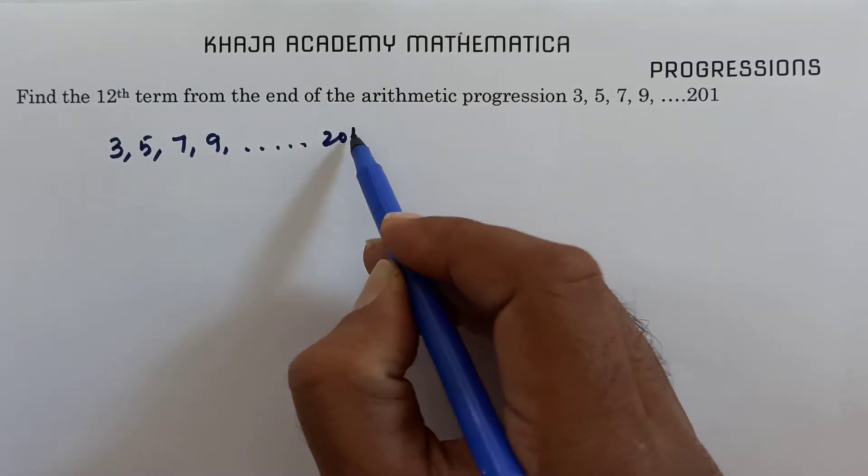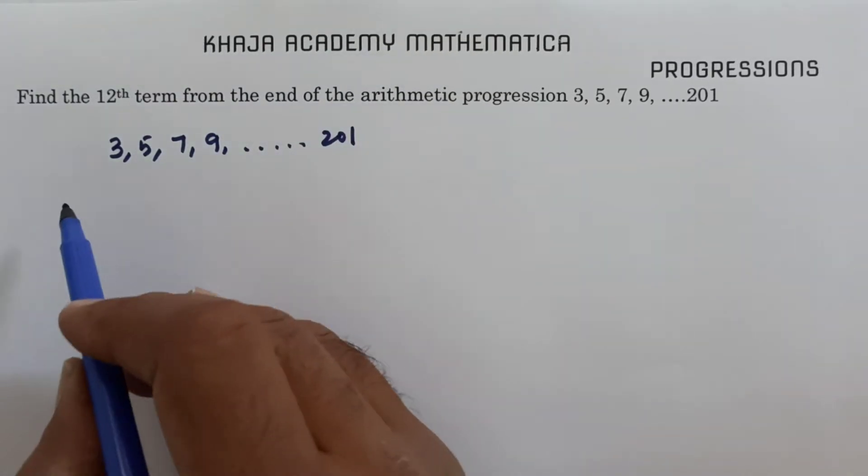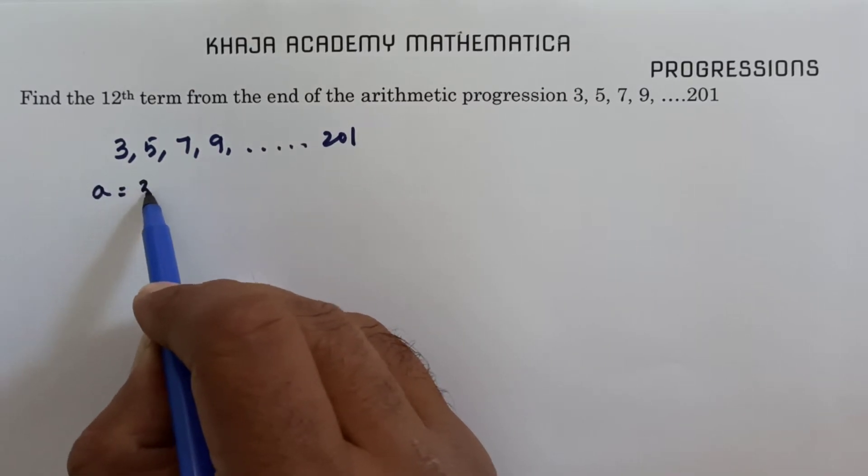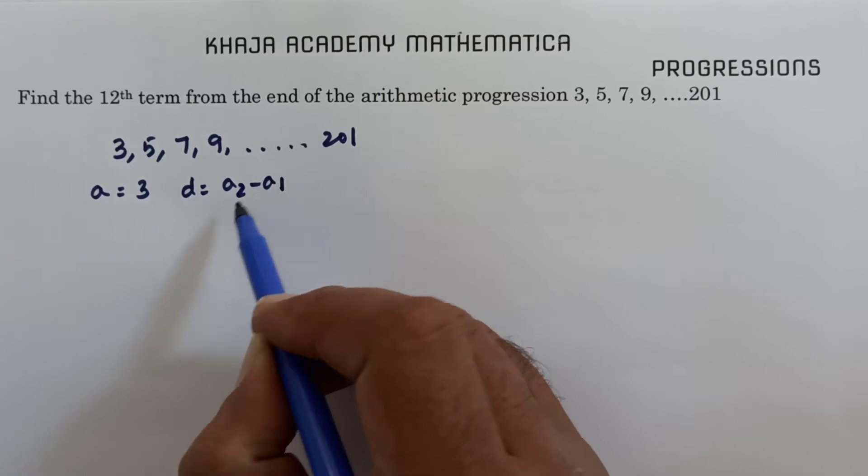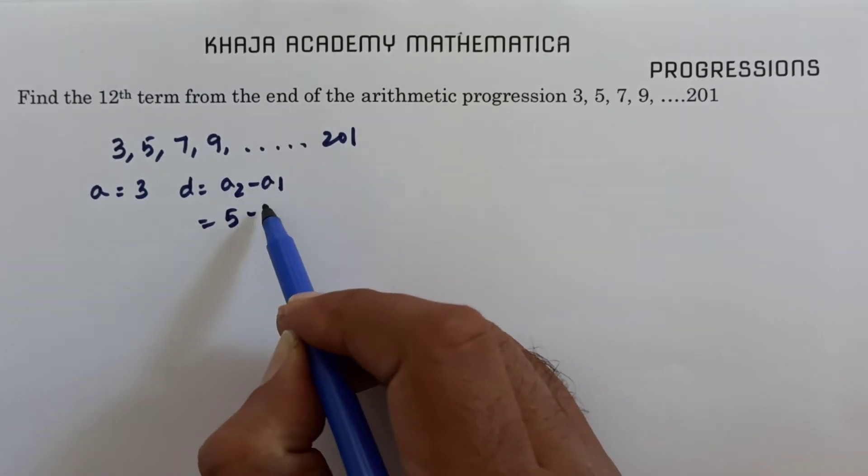First, write what is the first term. The first term is 3. The common difference, that is a2 minus a1, is 5 minus 3.